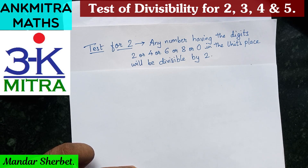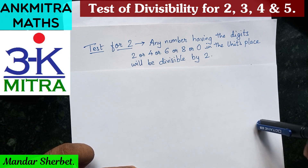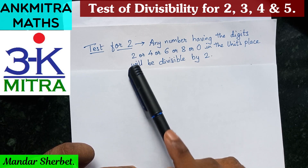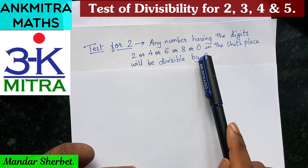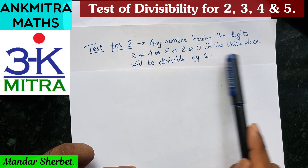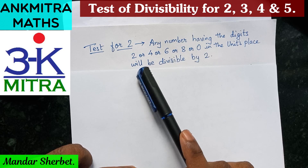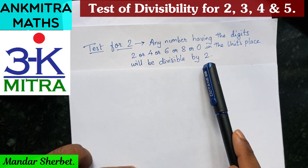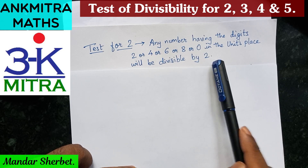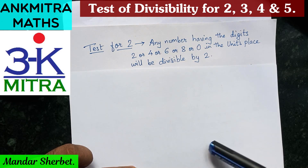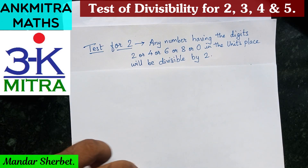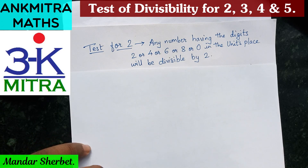So just check the units place digit. If it is any of these five digits — 2, 4, 6, 8, or 0 — then we can certainly say the given number is divisible by 2. I'll take examples after explaining all these tests so you'll understand better. Now let's move to the test for divisibility for 3.